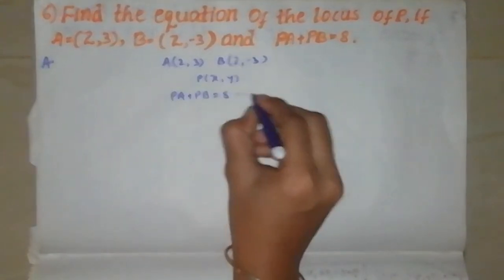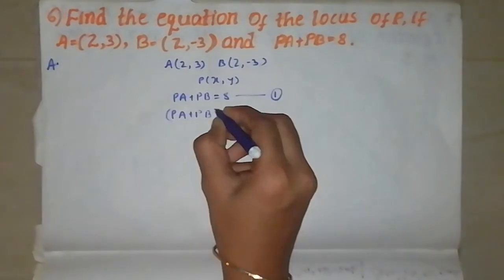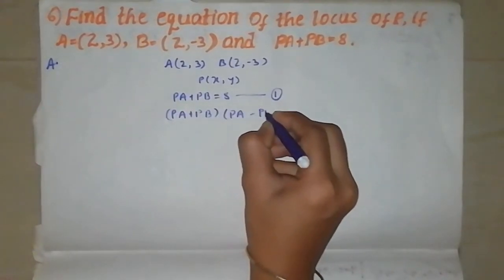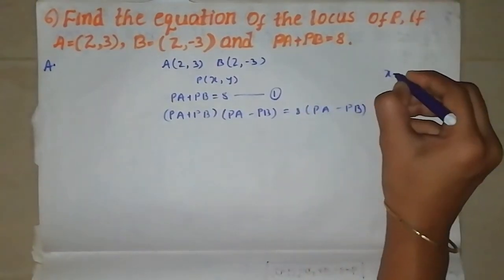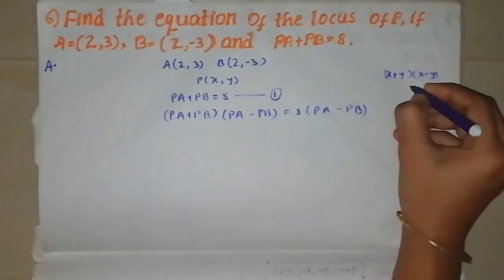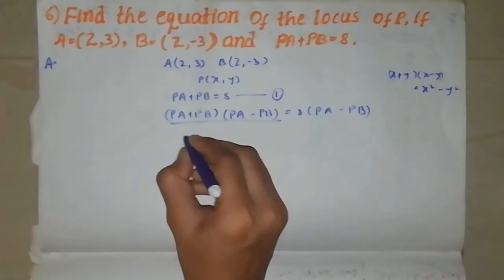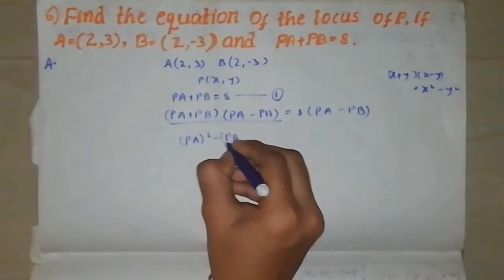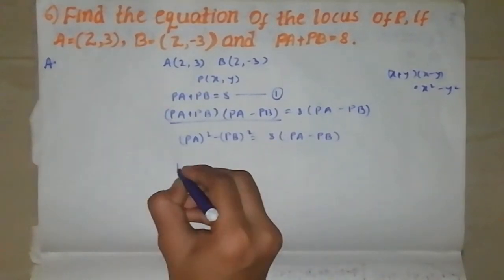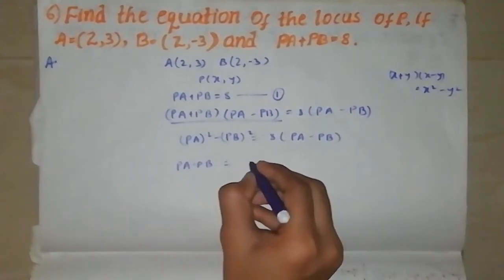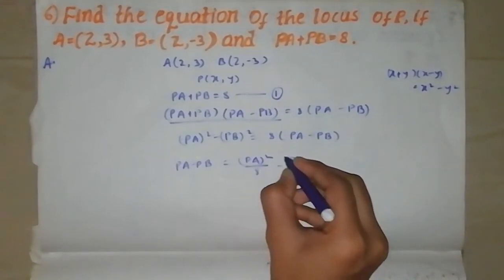I am going to explain this equation. We have to write (x+y)(x-y) equal to x squared minus y squared. So we have PA squared minus PB squared equal to 8 into (PA minus PB). Therefore PA minus PB is equal to 8, giving us PA squared by 8 minus PB squared by 8.